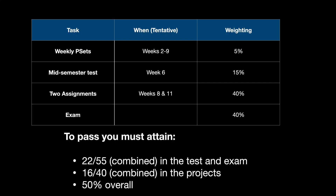To pass the class, what do you need to do? First off you need the same thing as always — 50 percent. However, we do have hurdles in this class. We need to make sure you're competent on both the theoretical side and the more applied side of the course. That will be 22 out of 55 combined across the test and the exam, and then 16 out of 40 combined in the project. So if you're better at project work we allow you to show off your shine there, and if you're better at the theoretical side you can show that off in the test and the exam, but we do require minimal competency in both, and you still need to attain 50 percent overall.